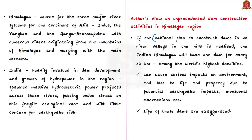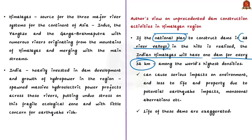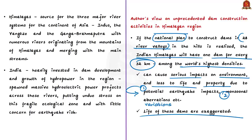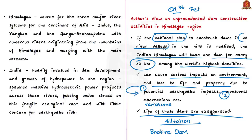The author also talks about a national plan to construct dams in 28 river valleys in the hills of the Indian Himalayas. If realized in a few decades, Indian Himalayas would have one dam for every 32 kilometers — the world's highest densities of dams — which could cause serious environmental impacts and loss of life and property due to potential earthquake impacts and monsoon aberrations. Moreover, the life of these dams is often exaggerated, as siltation and sedimentation reduce the actual lifespan significantly. For example, in the Bakra Dam in Himachal Pradesh, siltation was higher by 140% than calculated.